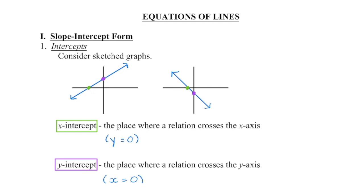Think about what we already know about graphs. If we have a linear graph it's going to make a straight line. We know the x-intercept is where the graph crosses on the x-axis, and the y-intercept is where the graph crosses on the y-axis. Every time we have an x-intercept, y is zero — we're right on the x-axis where y is zero. And if we have a y-intercept, x is always zero — we're neither to the left nor to the right.